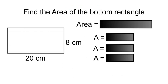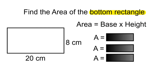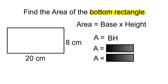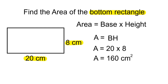Our last shape will be the bottom rectangle. Area is equal to base times height — A equals B times H. The base is going to be 20 centimeters and the height is going to be 8 centimeters. So area equals 20 times 8, and the area of the bottom rectangle will be 160 centimeters squared.